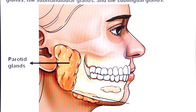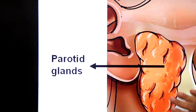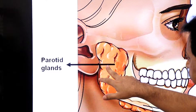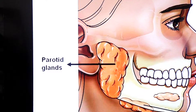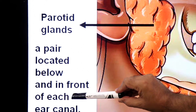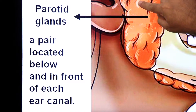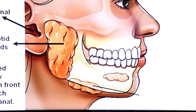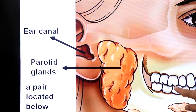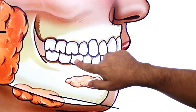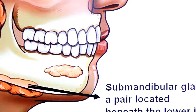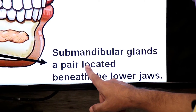Looking at the picture, the first pair of salivary glands is known as the parotid gland. Some part of the parotid gland is located in front of the ear and some part is below the ear. The parotid gland is located below and in front of each ear, near the ear canal.